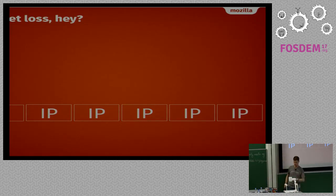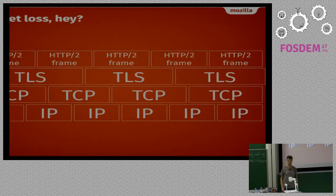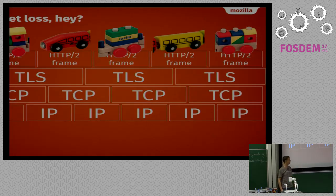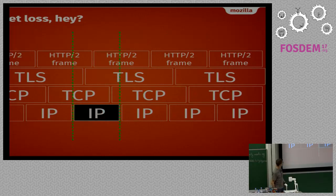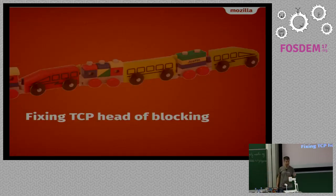TCP networking: we have an IP layer, a TCP layer, TLS, and we speak H2. The H2 frames sent over the network - lose one packet and everything aligned stops, because everything is built on top of it together. So we need to fix the TCP head-of-line blocking problem. We can't have 99 unrelated images blocked because one image's single packet has been lost.